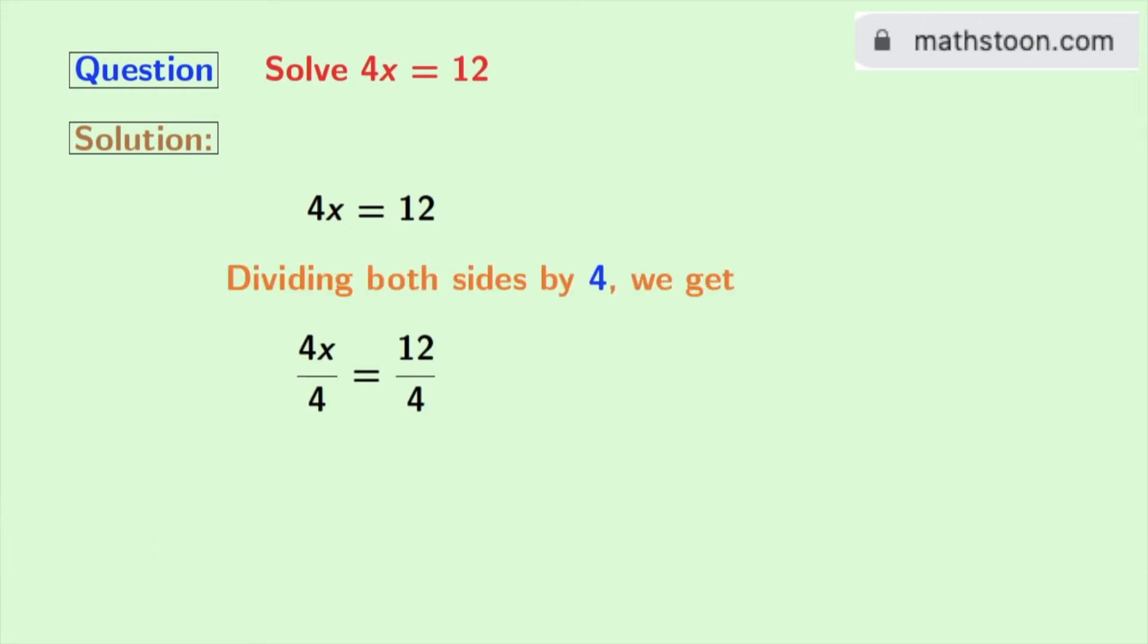Doing that we get 4x by 4 is equal to 12 by 4. Look that in the left hand side 4 gets cancelled and we are left with x. And in the right hand side we have 12 by 4 which is 3.